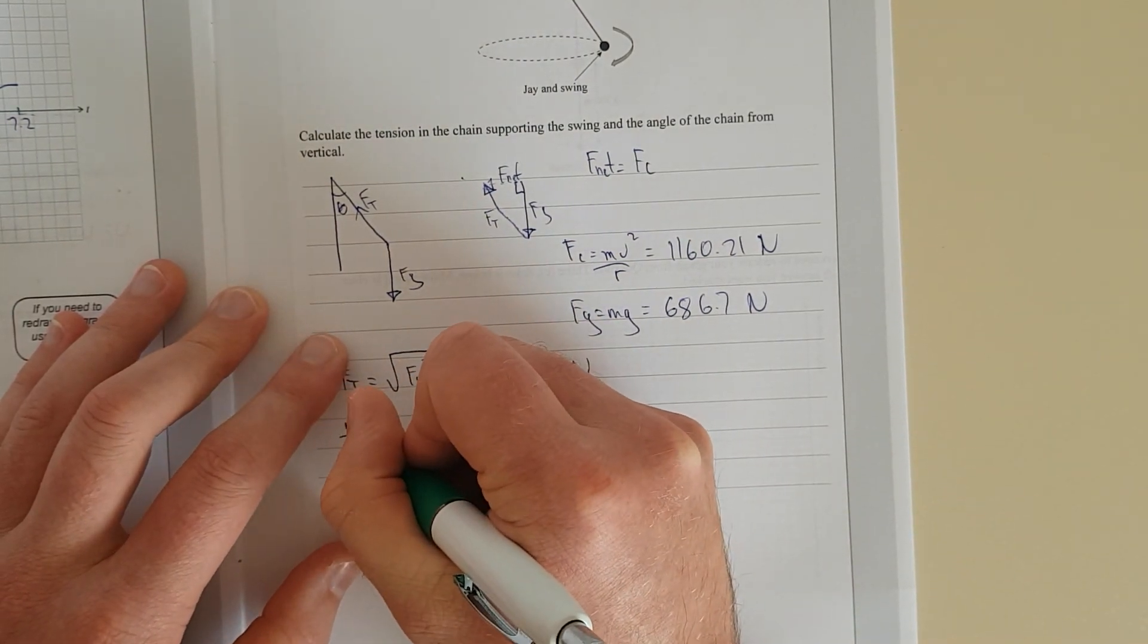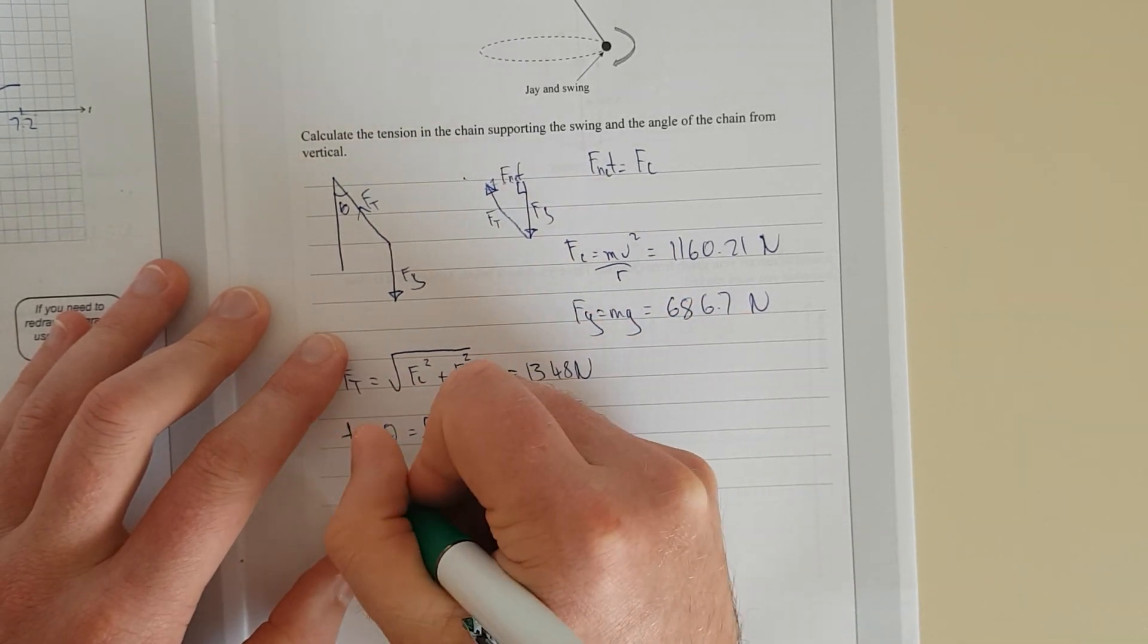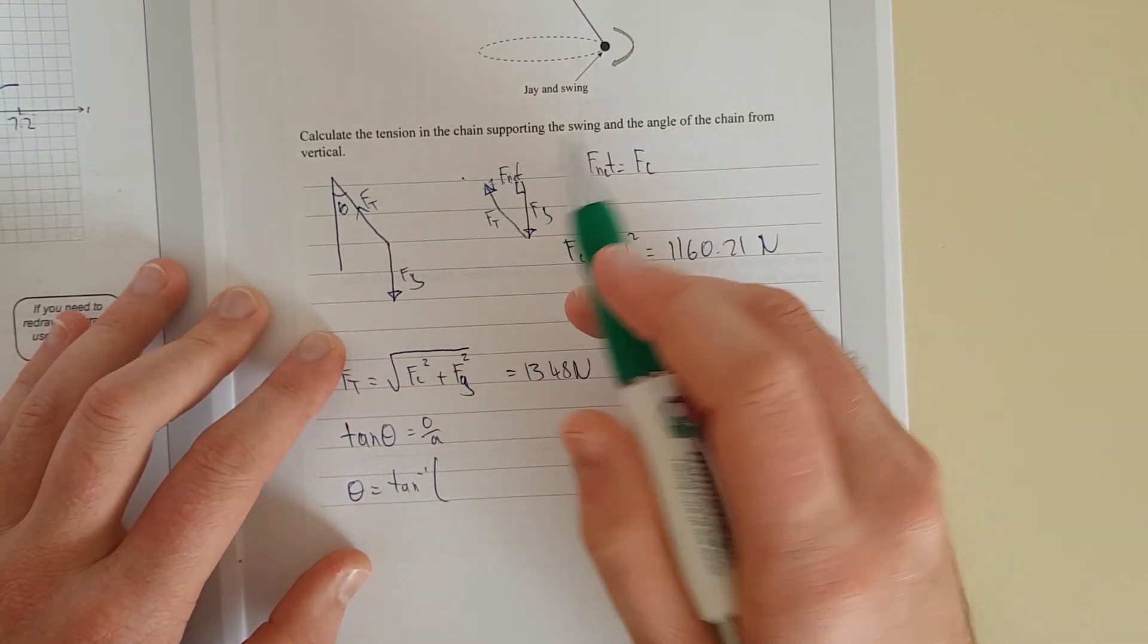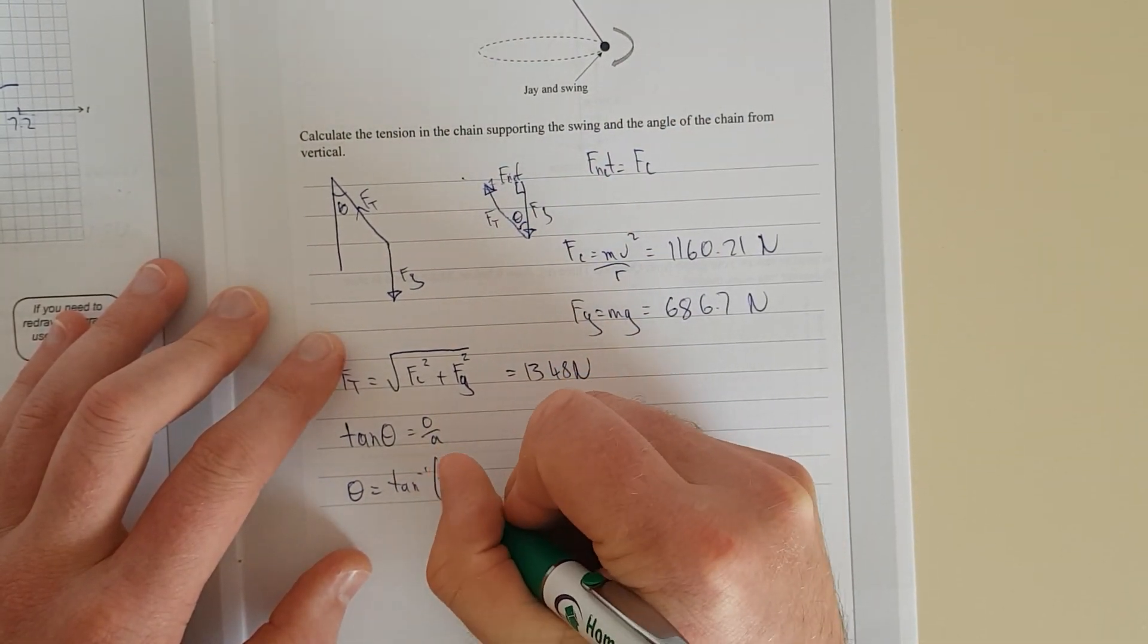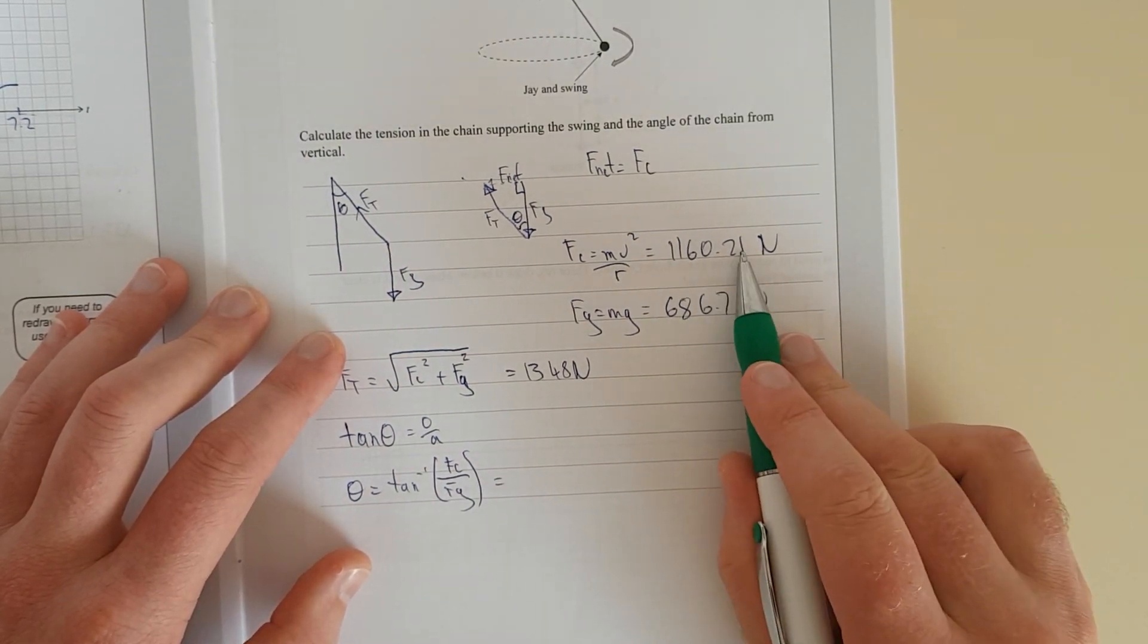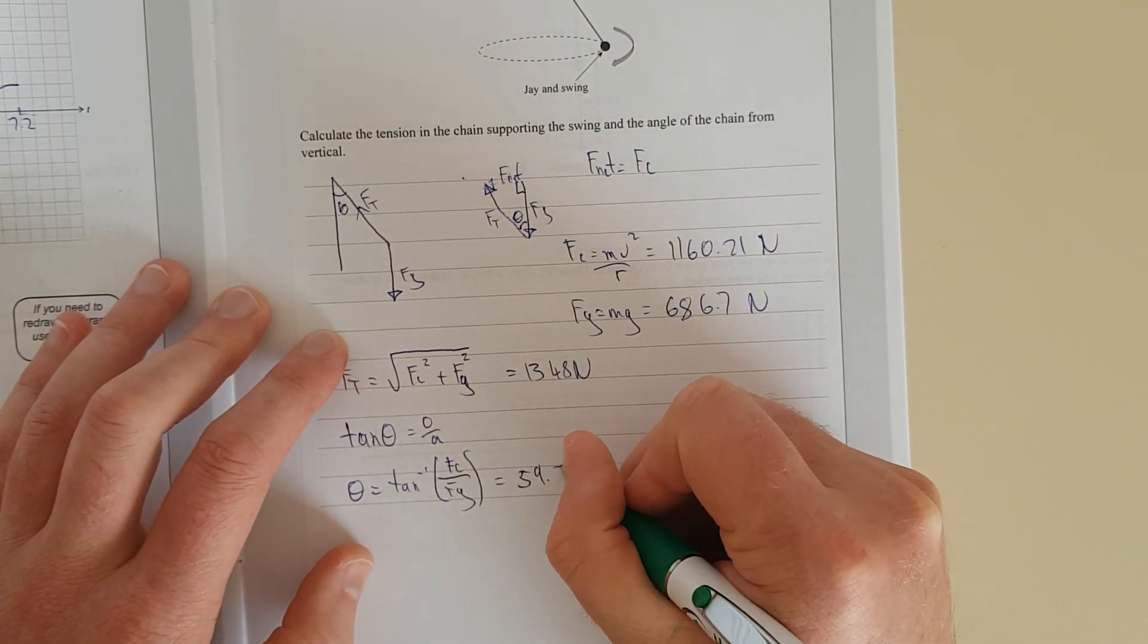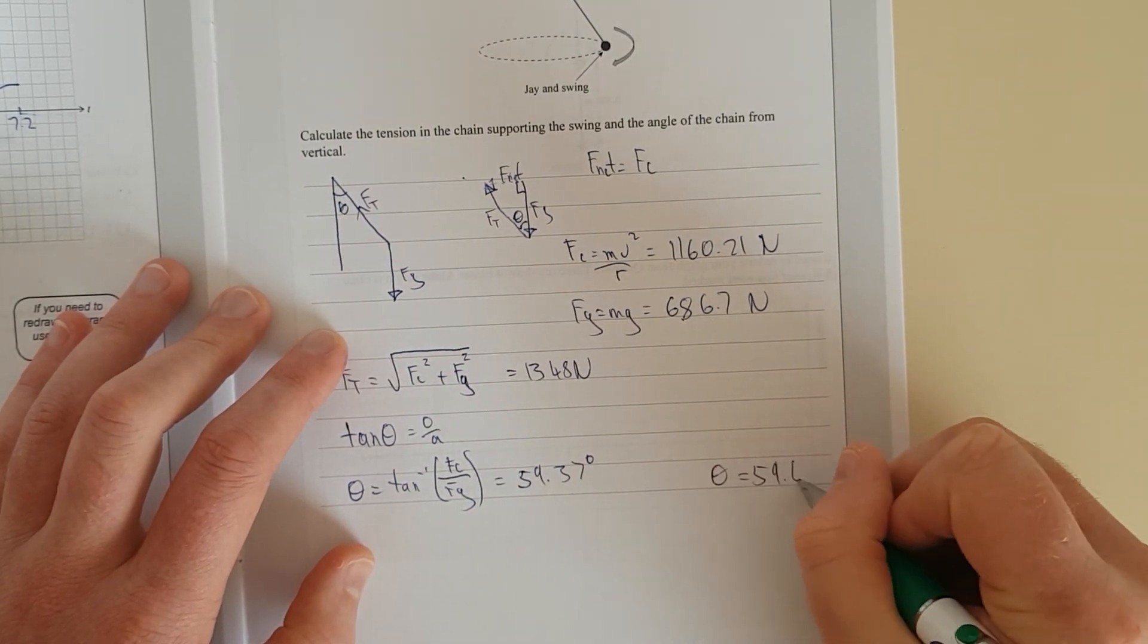So I'm going to use the opposite and the adjacent. So tan theta is equal to the opposite over the adjacent. In other words, theta is equal to tan inverse the opposite is the net force. Because this here is theta. And that's Fc over Fg. By the time you substitute those numbers in, we should get because Fc 1160, Fg 686, we should get 59.37 degrees. In other words, theta is equal to 59.4 degrees.